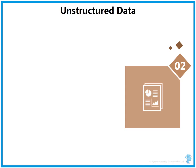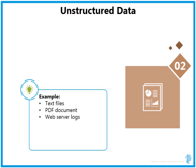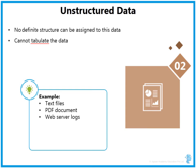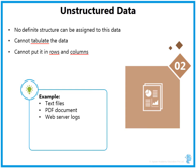Unstructured data is best understood by thinking about a text file, a PDF document, or web server logs — pure verbose content with no definite structure that can be assigned to it. It can be plain text, numbers, or a sequence of bytes, but you cannot tabulate it or fit it into rows and columns or any kind of schema. Text files are the best example. Other examples include web server logs and WhatsApp messages, which are plain text with attachments like photos or voice messages.